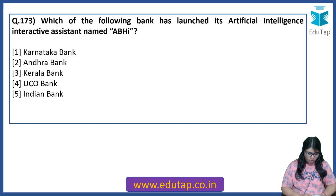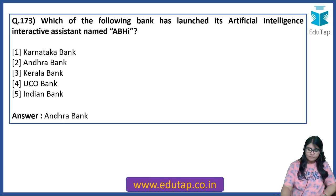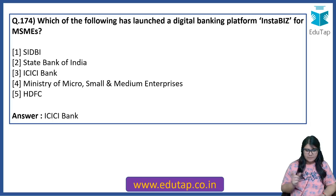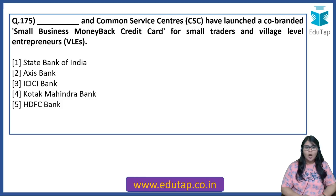Which of the following banks has launched its artificial intelligence interactive assistant named ABHI? The answer is Andhra Bank. Which of the following has launched a digital banking platform Instabiz for MSMEs? The correct answer is ICICI Bank — a private bank. Remember, we were dealing with a question about robotic arms and that also was ICICI Bank. Keep relating these things to remember important information.